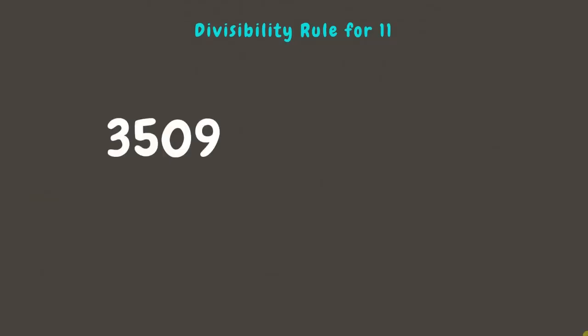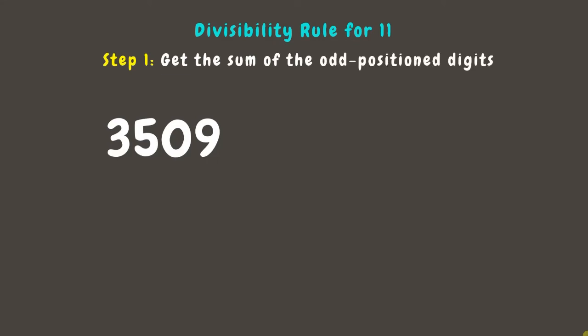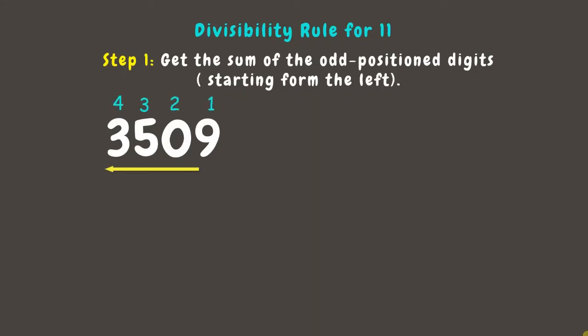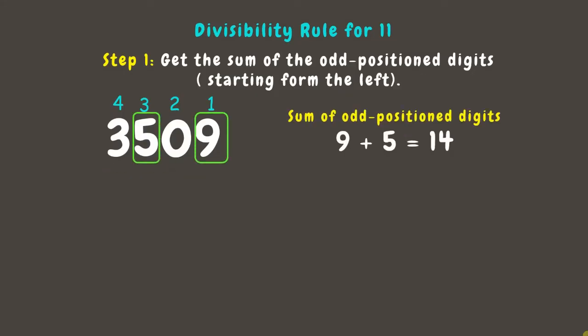Three thousand five hundred nine. Again, the first step is to get the sum of the odd position digits. Let's label the digits first, starting from the left. For 3509, the odd position digits are 9 and 5, and if we add them the answer is 14.